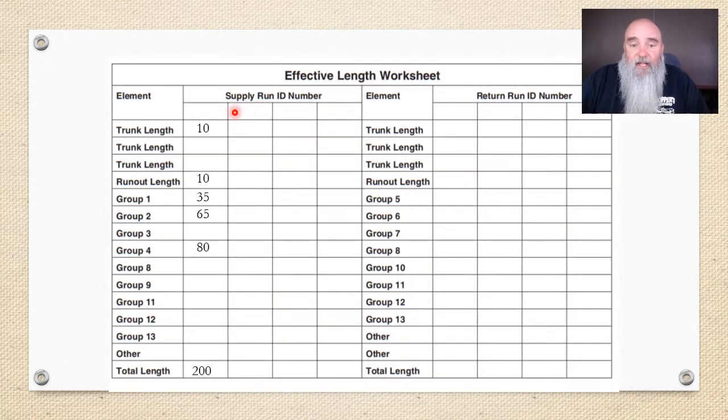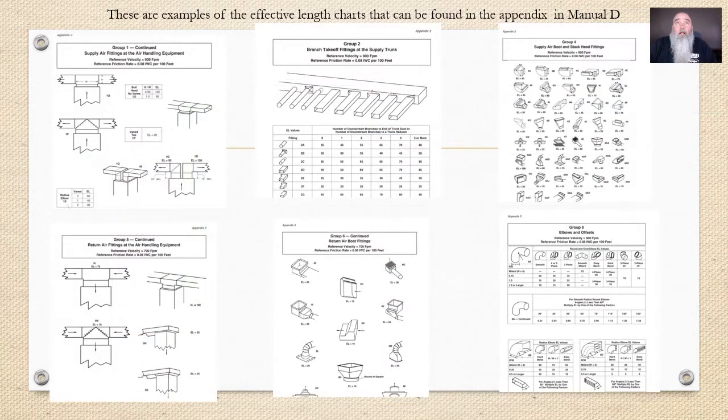And if you've ever filled out the effective length worksheet, this is part of the process of doing a Manual D calculation. Well, there it is. These are examples of the charts that you'll find in Manual D, and they are grouped. Let's see, this is a supply, so the reference velocity is going to be 900 feet per minute. This is a supply, reference velocity is going to be 900 feet per minute.